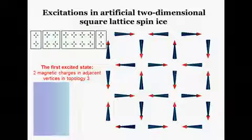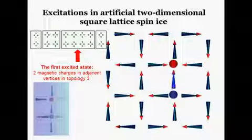The first excited state arises when, in a particular vertex, the ice rule is violated. It creates two adjacent vertices, in which one has three spins point in and one out, while the other has three out, one in.